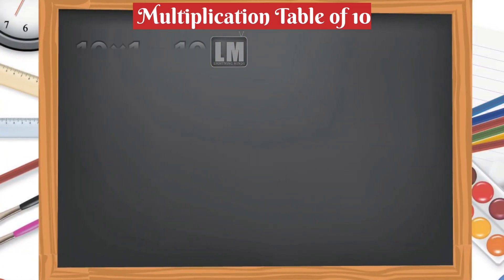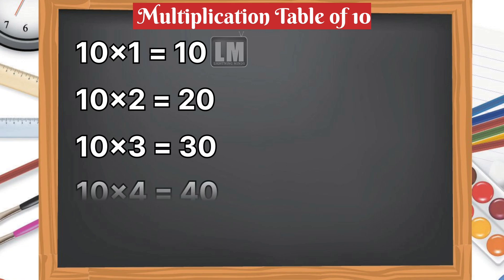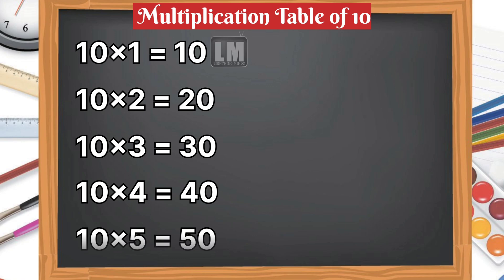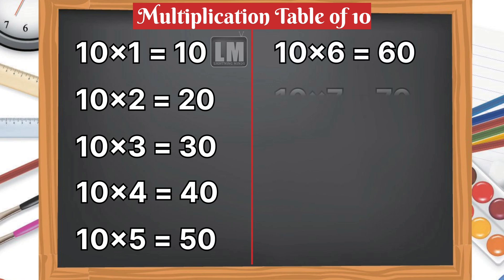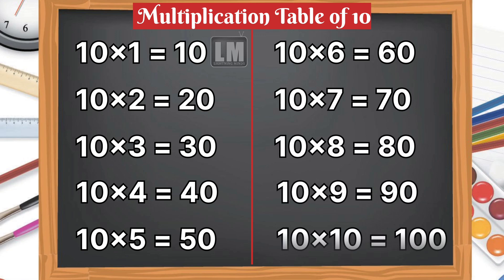Let's learn multiplication table of 10. 10 1s are 10, 10 2s are 20, 10 3s are 30, 10 4s are 40, 10 5s are 50, 10 6s are 60, 10 7s are 70, 10 8s are 80, 10 9s are 90, 10 10s are 100.